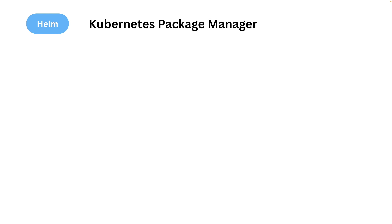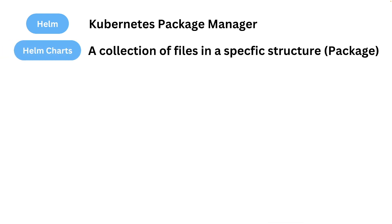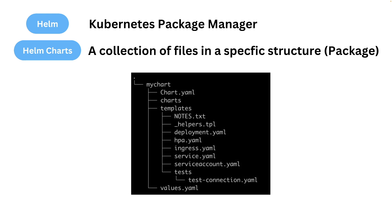In this video we're going to start with a Helm introduction. Helm is basically the Kubernetes package manager — this is what is going to help you manage packages. You have Helm charts, which are basically the packages, and Helm is going to help you apply, install, and upgrade your Helm charts.